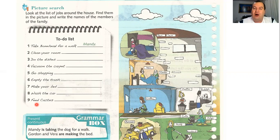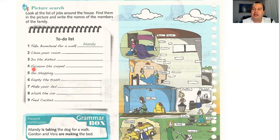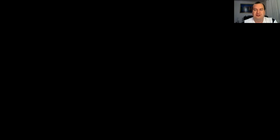Agora a sua missão: olhar nessa To Do List. Number one: levar o Bonehead para passear. Number two: limpar o quarto. Number three: lavar a louça. Number four: passar o aspirador. Number five: ir às compras. Number six: esvaziar o lixo. Number seven: arrumar a cama. Number eight: lavar o carro. Number nine: alimentar o gatinho. Você vai escrever nas linhas quem são as pessoas que estão fazendo estas ações. Pausa a aula agora e faça essa tarefa aí!